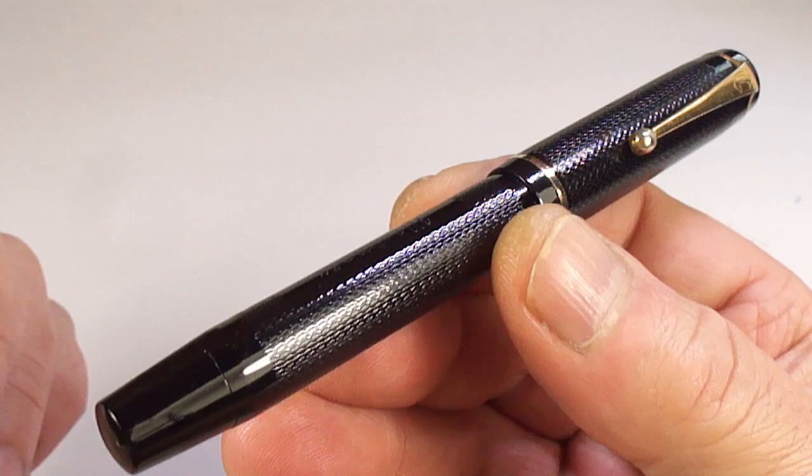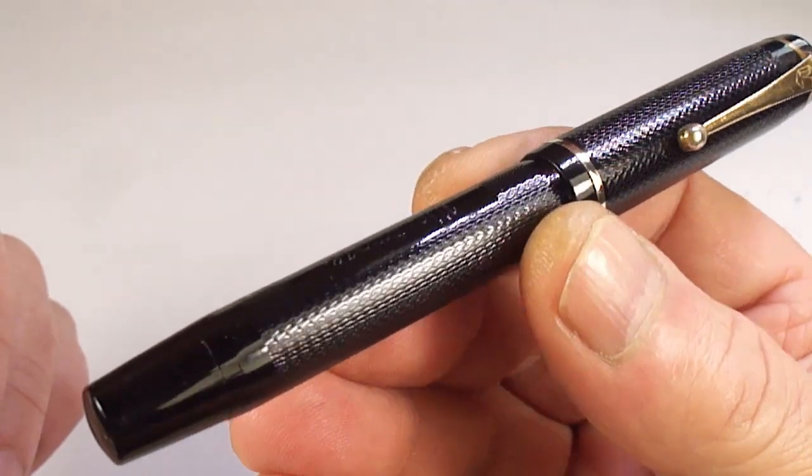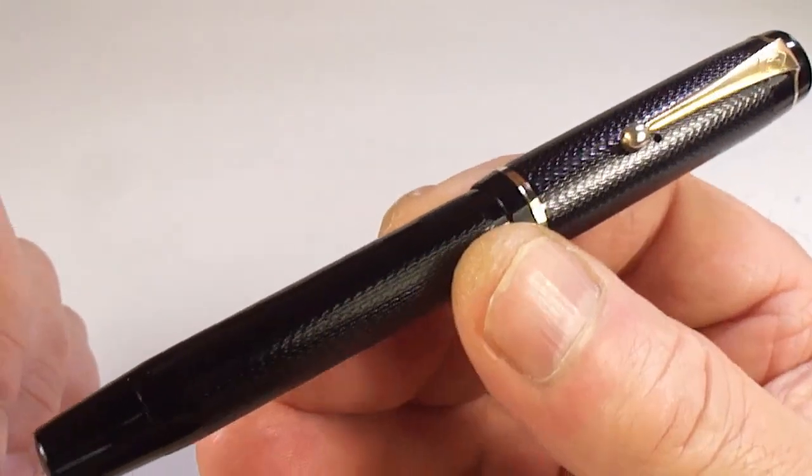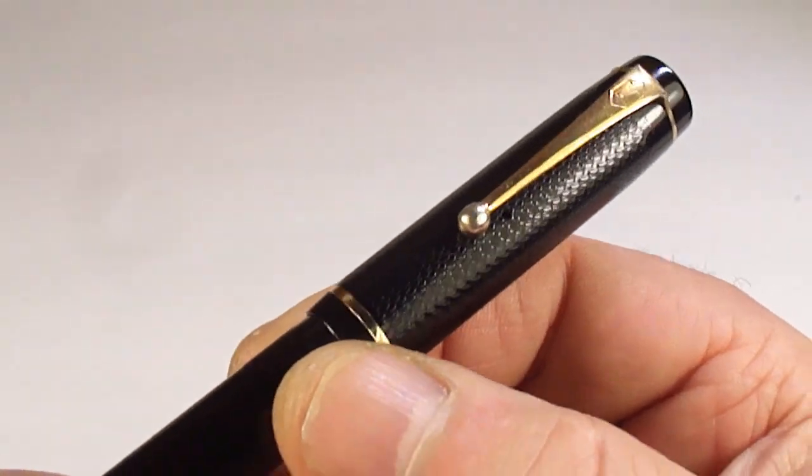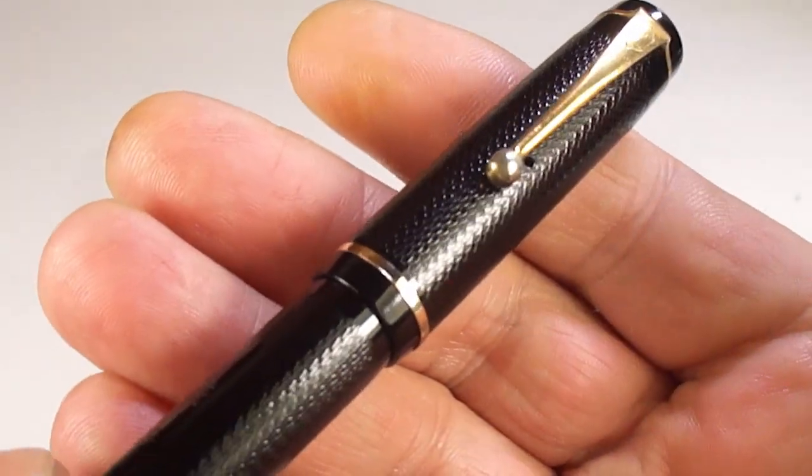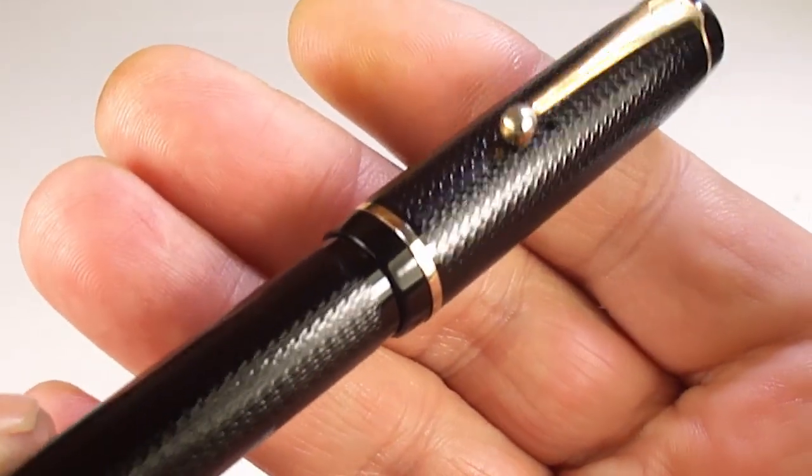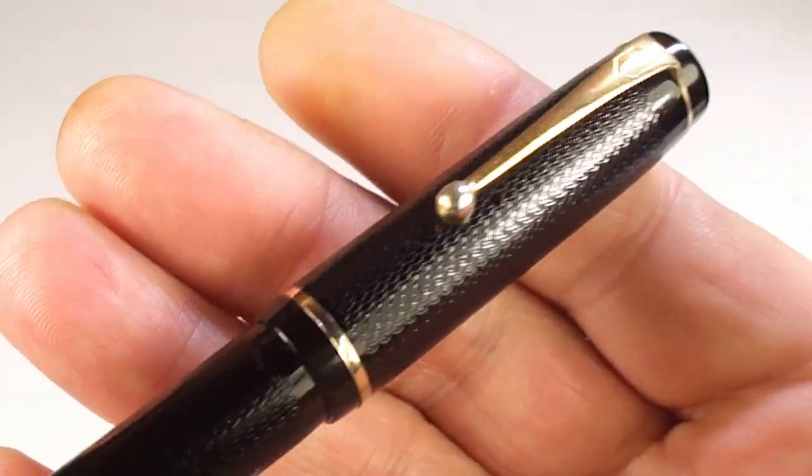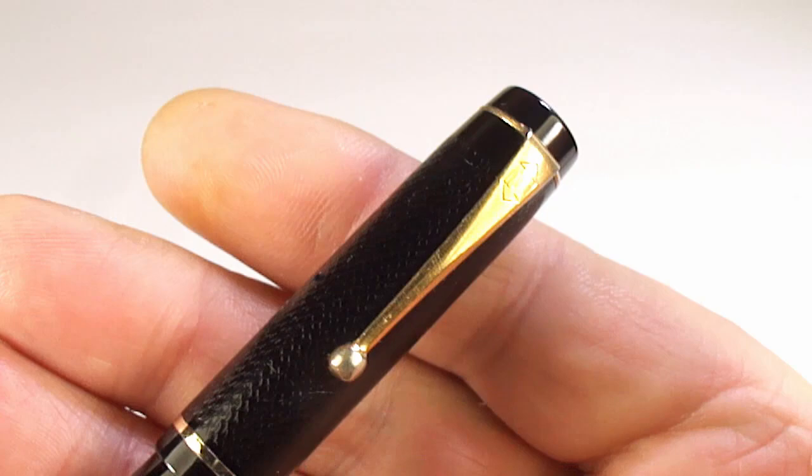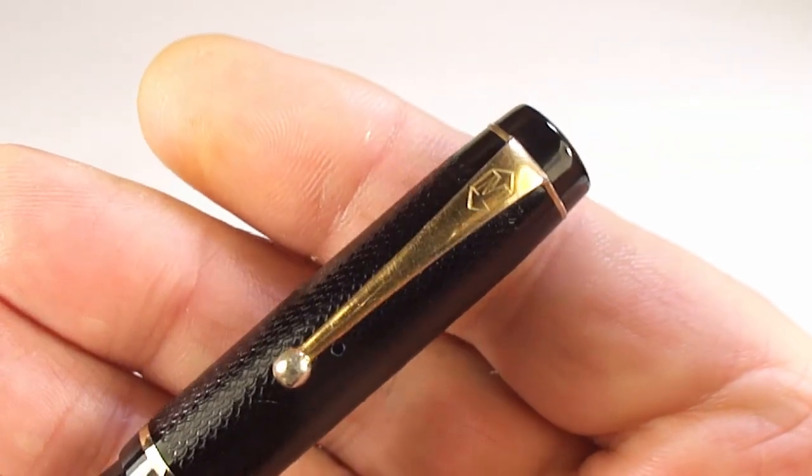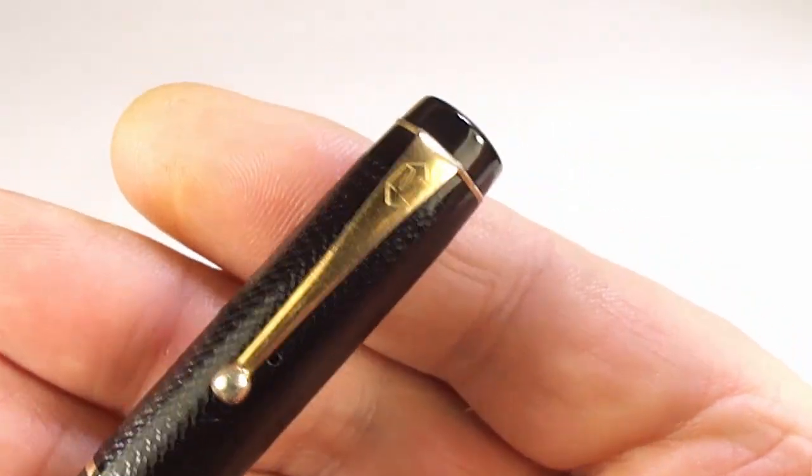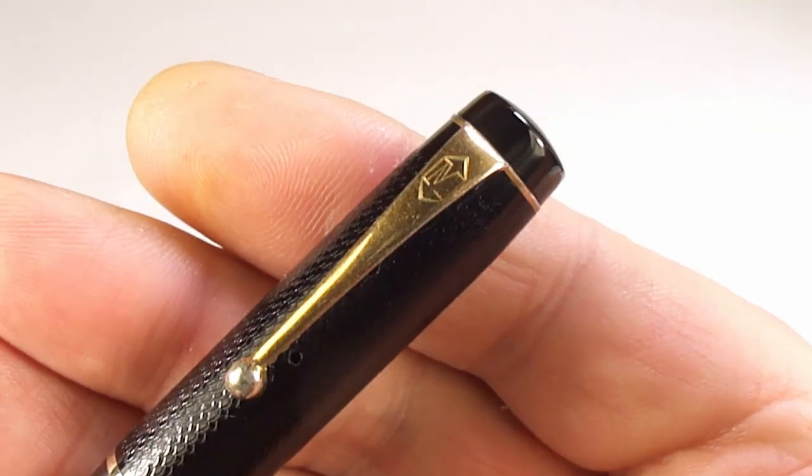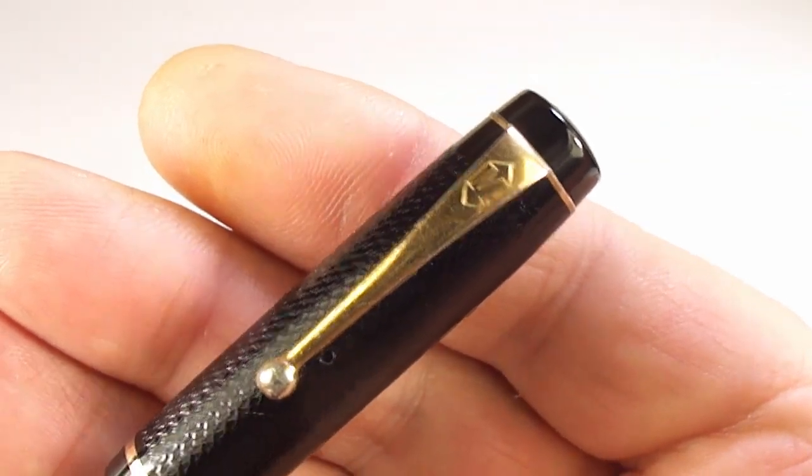But this handsome beauty, as you can see, comes in this classic black, lovely chase pattern. It's got gold plated, gold filled trim. You can see it's got quite a thin cap band there. It's got this Mentmore ball clip there, you can see. It's got the Mentmore M logo to the very top of the clip.